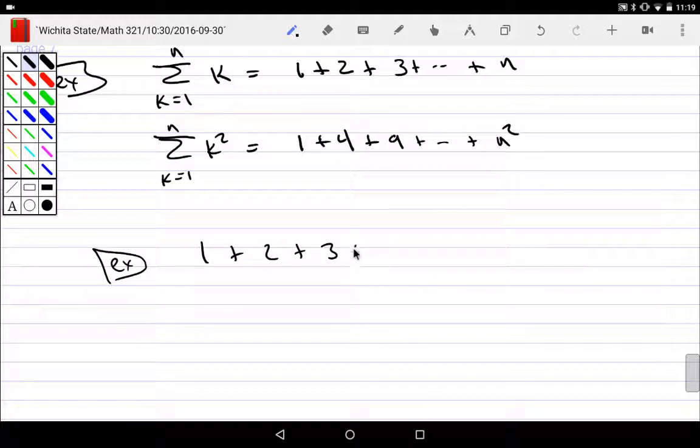What do I notice about 1 and 6? Can I add in any order I want? Yes, property of addition. What's 1 plus 6? 7. What's 5 plus 2? What's 3 plus 4? How many 7s do I have? Why do I have 3?